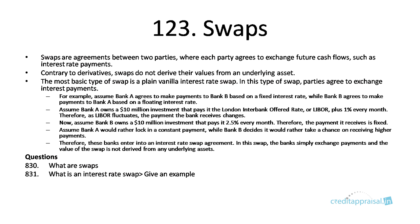For example, Bank A owns a $10 million investment that pays it the LIBOR rate plus 1%. So as the benchmark LIBOR changes, the payment Bank A receives also changes. Now, assume Bank B has a $10 million investment that pays it 2.5% every month — a fixed rate — so it will receive fixed interest every month.